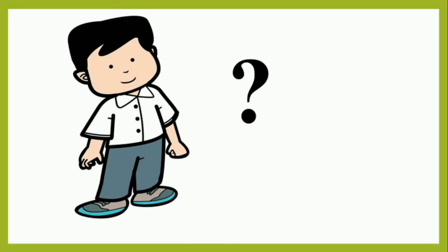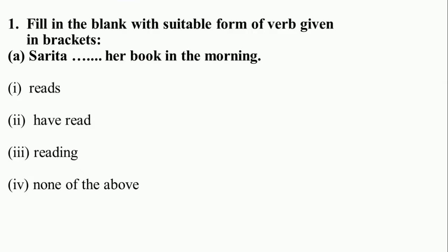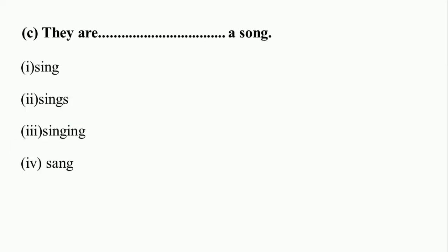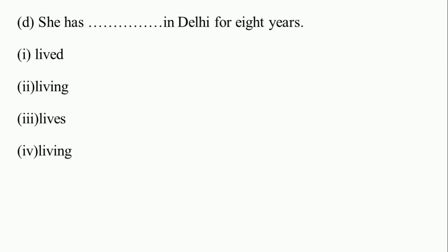Now let's see what we have learnt and identify the correct answers. A: Sarita ___ her book in the morning — the correct option is 'reads.' B: Neetu ___ to temple every morning — the correct option is 'goes.' C: They are ___ a song — the correct option is 'singing.' D: She has ___ in Delhi for 8 years — the correct option is 'lived.'